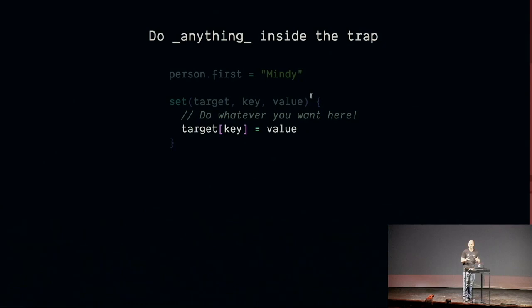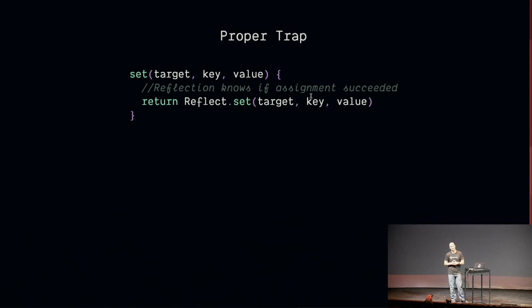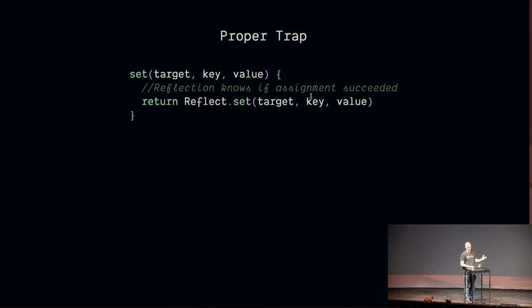A proper trap does use reflection. Reflection is another type of metaprogramming. You can think of Reflect.set as the exact same thing as target[key] = value. Reflect.set takes target, key, value and returns whether or not that successfully set that property. Because it's important — if you're in strict mode, if an object was frozen or sealed, you need to know if you failed to set it. When using proxies, use reflection for setting and getting. The signature of the trap matches with the signature of all the reflection APIs.